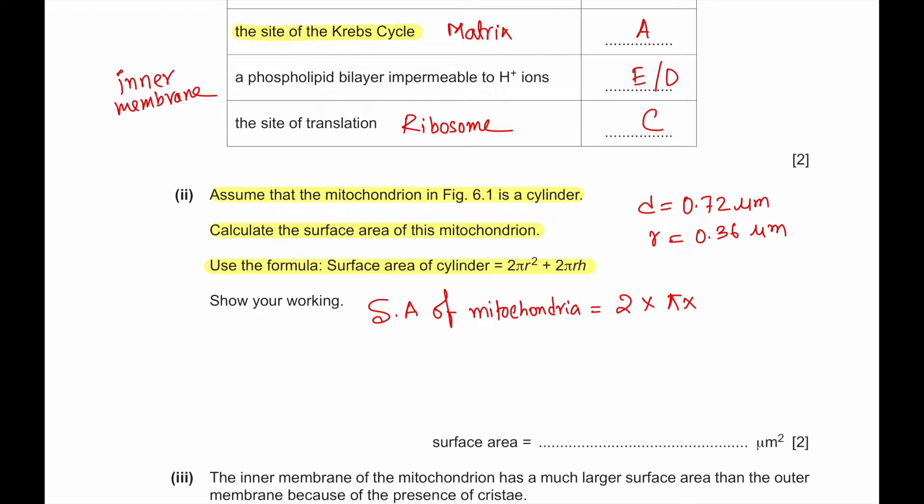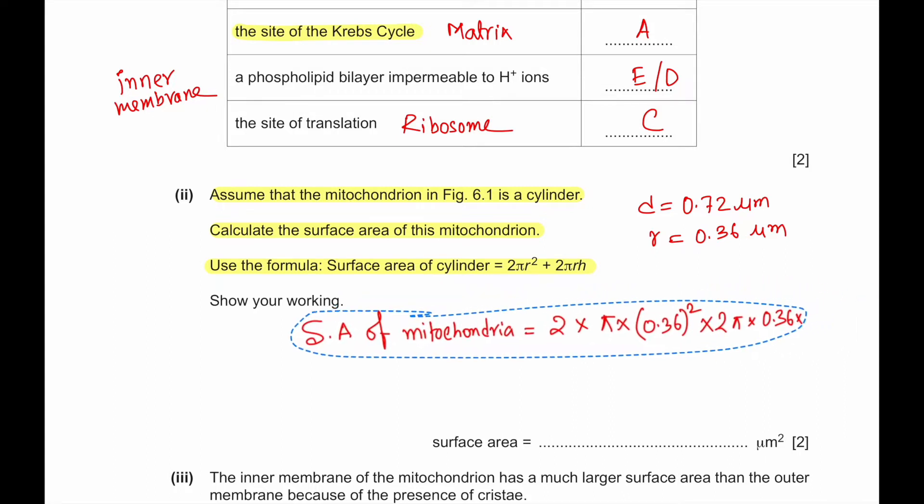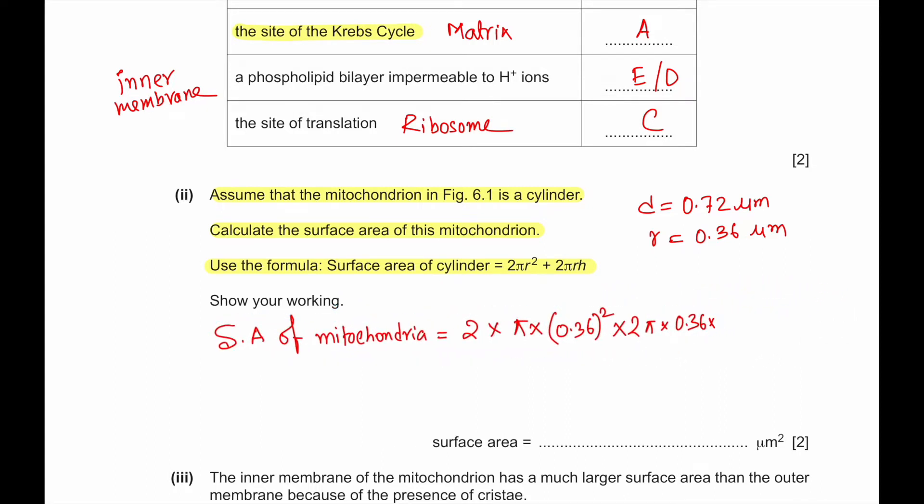So 2πr² will be 0.36 squared, multiplied by 2πr which is 0.36 times height 5.25 from the diagram. The surface area comes to 12.69, which is equivalent to 12.7 micrometer square.